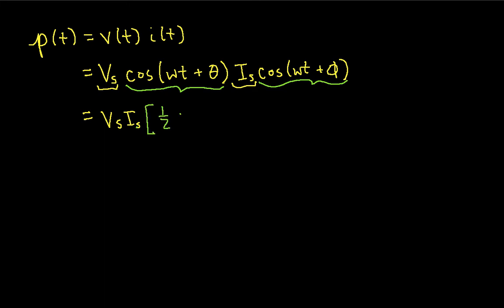One half cosine omega T plus theta minus omega T minus phi, plus one half cosine 2 omega T plus theta plus phi. The idea here is that there is a trig identity that says the product of cosines can be written in terms of the sum of the cosine of their arguments, of the difference of their arguments, plus the cosine of the sum of their arguments, which is what we have here.